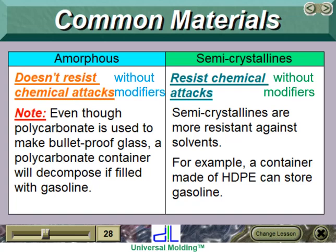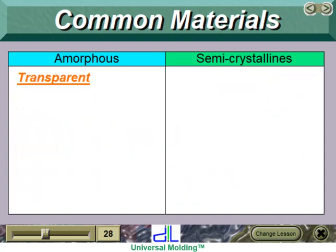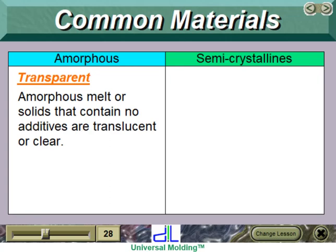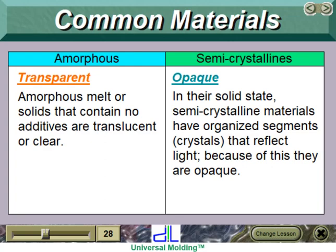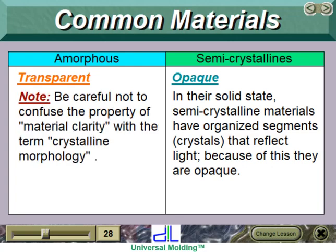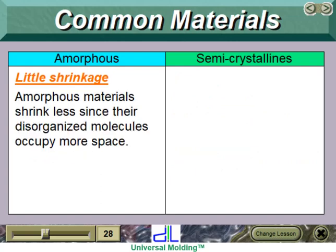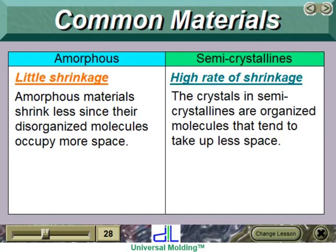Note: even though polycarbonate is used to make bulletproof glass, a polycarbonate container will decompose if filled with gasoline. Amorphous materials are transparent — amorphous melts or solids that contain no additives are translucent or clear. Semicrystalline materials are opaque; in their solid state, their organized segments or crystals reflect light, which is why they are opaque. Be careful not to confuse the property of material clarity with the term crystalline morphology. Amorphous materials have little shrinkage, since their disorganized molecules occupy more space. Semicrystallines have a high rate of shrinkage — their organized crystals tend to take up less space.